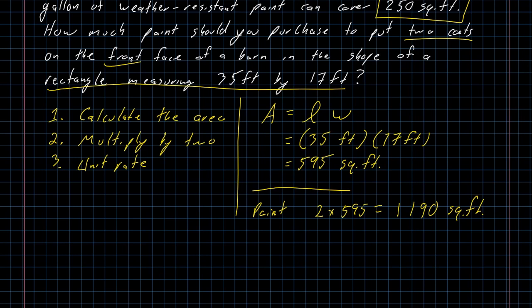My third step. 1,190 square feet multiplied by the conversion factor that I'm using out of my unit rate, which was 1 gallon per 250 square feet. Take my 1,190 divide by 250, and I get 4.76 gallons.